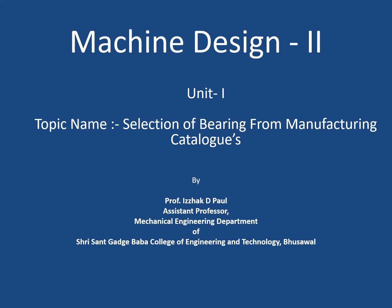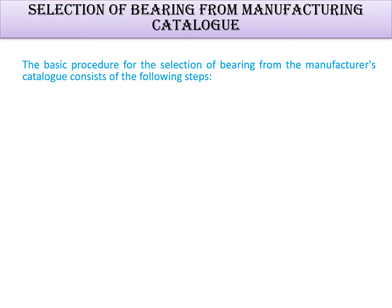The next topic is the selection of bearings from manufacturing catalogs. We have already seen dynamic load, static load, equivalent dynamic load, and the related equations. Now we will see how these equations are used to select a bearing. Since bearings are already manufactured to standard specifications, selection is more important than design. The basic procedure for selecting a bearing from a manufacturing catalog is outlined here.